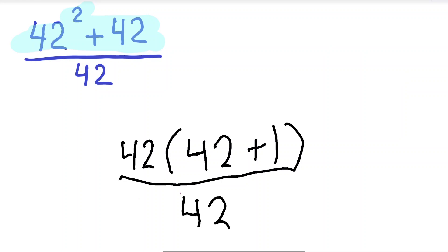So what do we do now? Well, remember how we couldn't cancel this because it was being added and divided? Well, the 42 here is not being added—instead it's being multiplied to this part, which means we are allowed to cancel it.